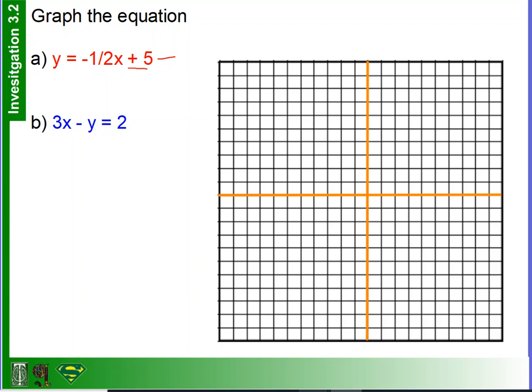The first thing I want to do is take the y-intercept, which clearly is the number that is not being multiplied by the independent variable x. So my y-intercept is 5, so I'm going to go up 5 on the y-axis: 1, 2, 3, 4, 5, and put a dot.